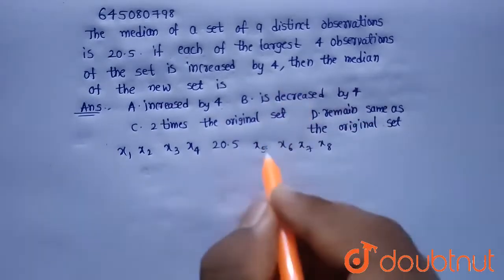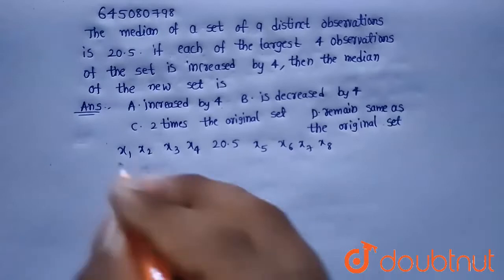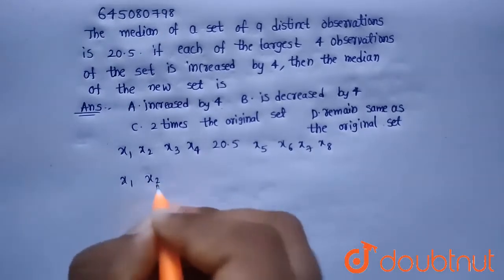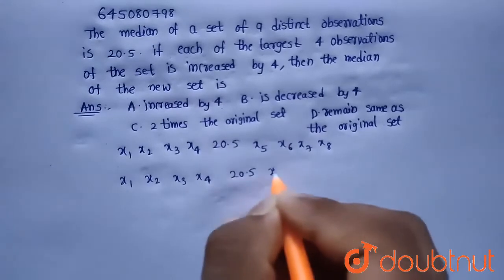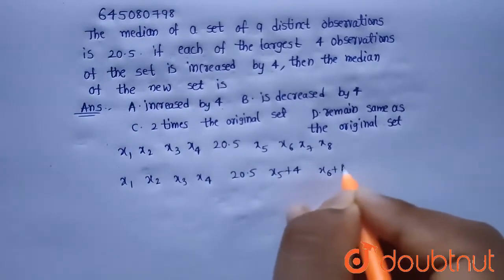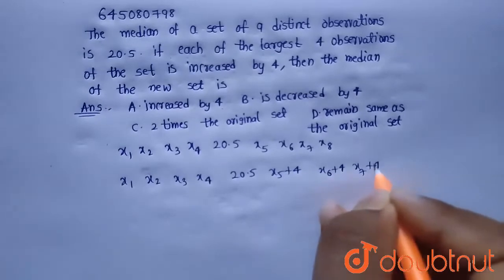Now given that the largest 4 observations are increased by 4, so then x1, x2, x3, x4, 20.5, x5 plus 4, x6 plus 4 and x7 plus 4 and x8 plus 4.